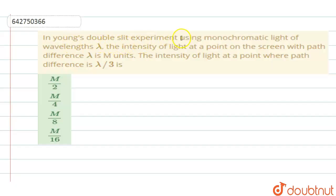In this double slit experiment using monochromatic light of wavelength lambda, the intensity of light at a point on the screen with path difference lambda is m units. The intensity of light at a point where path difference is lambda by 3 is?